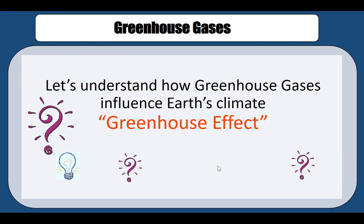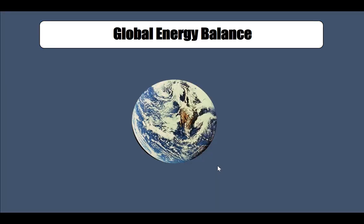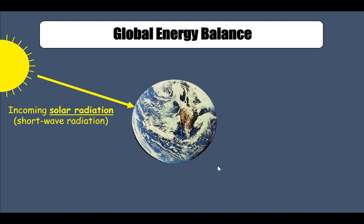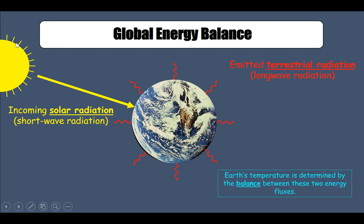We can now move to the greenhouse gas effect. The global energy is balanced between incoming solar radiation — also known as shortwave radiation — and outgoing terrestrial radiation — also known as longwave radiation. You want to make sure you understand the terminologies: solar radiation, incoming solar radiation, and shortwave radiation are all pretty much the same thing; terrestrial radiation and longwave radiation are the same thing.